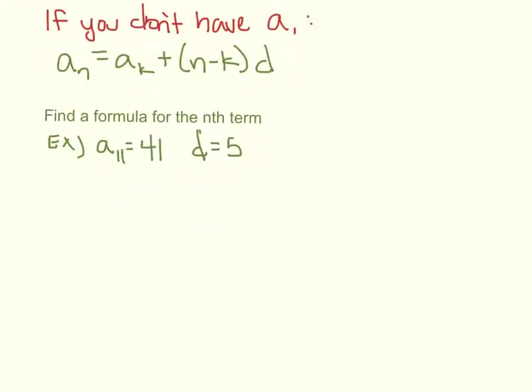Okay, let's look if we don't have a₁. This is pretty much the general rule. And if you're going to memorize one formula, I'd say to memorize this one. Because if you look at it, aₙ equals aₖ plus (n-k) times d.